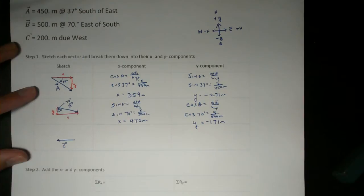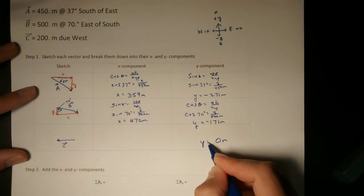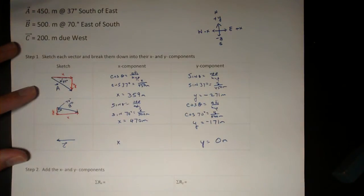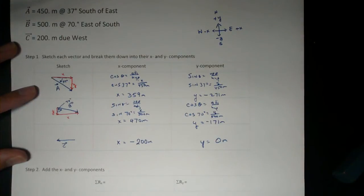For vector c, it does not point up or down. So the y component is 0 meters. It completely points to the west or to the left in the negative x direction. So negative 200 meters. No trigonometry needed there.